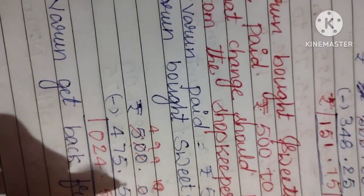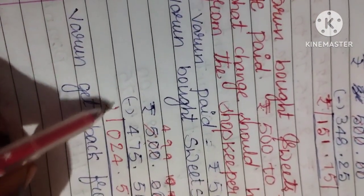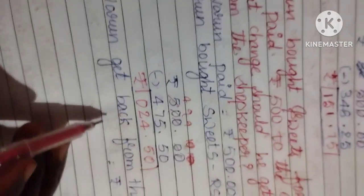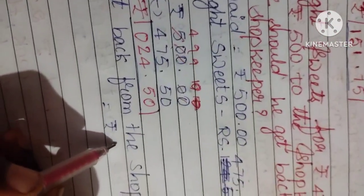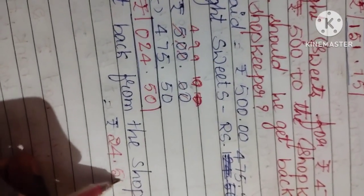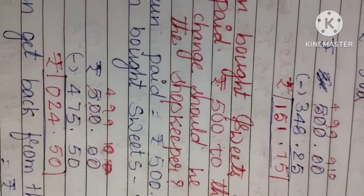So what amount, what change he get back? Rupees 24.50. So you can write now, Varun get back from the shopkeeper Rs. 24.50. This is the answer. Next we have third question.